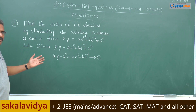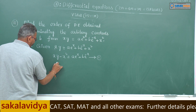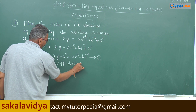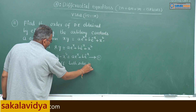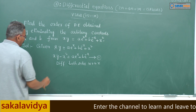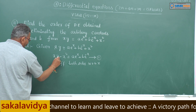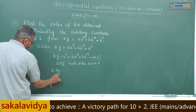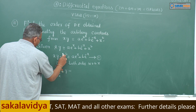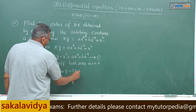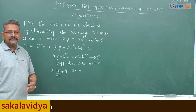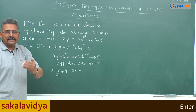First, differentiate both sides with respect to x. Using the product rule (uv method) on xy, we get x(dy/dx) + y·1 - 2x = ae^x + be^(-x)·(-1), which gives ae^x - be^(-x).